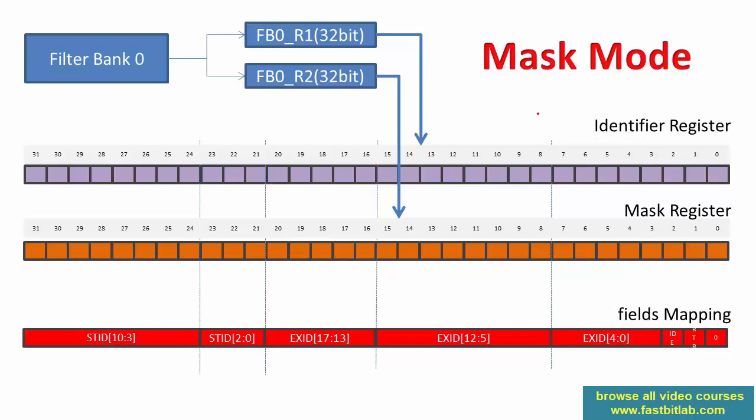Now we need to implement filter configuration using code. STM32 Cube provides data structures to configure the CAN controller's filter. In that data structure you specify the filter bank to use, the mode (mask mode or ID mode), and which FIFO the filter bank should forward the received or filtered message to. You must configure this, otherwise your application will not work. We'll explore the filter config APIs provided by the STM32 Cube HAL layer in the next lecture.